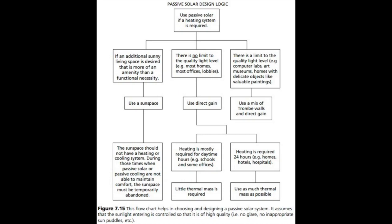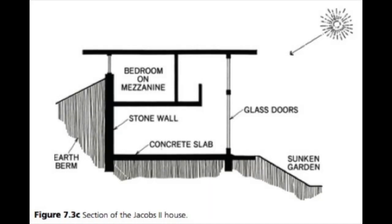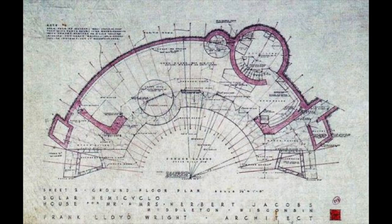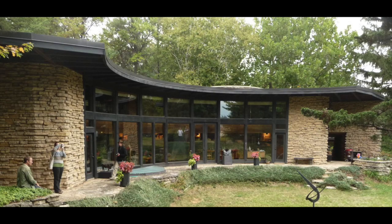One of the most interesting solar homes built is the Jacobs 2 house, designed by Frank Lloyd Wright. See the floor plan of this house, which Wright called the solar hemicycle. As usual, Wright was ahead of his time, because this building would in many ways make a fine passive home by present-day standards.